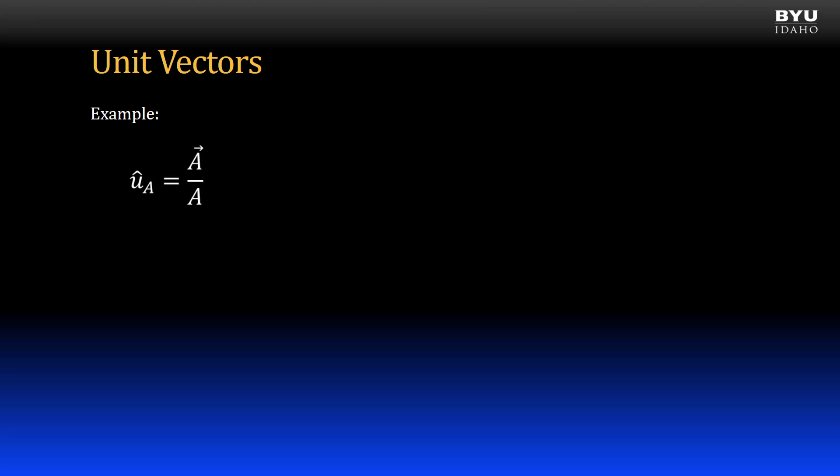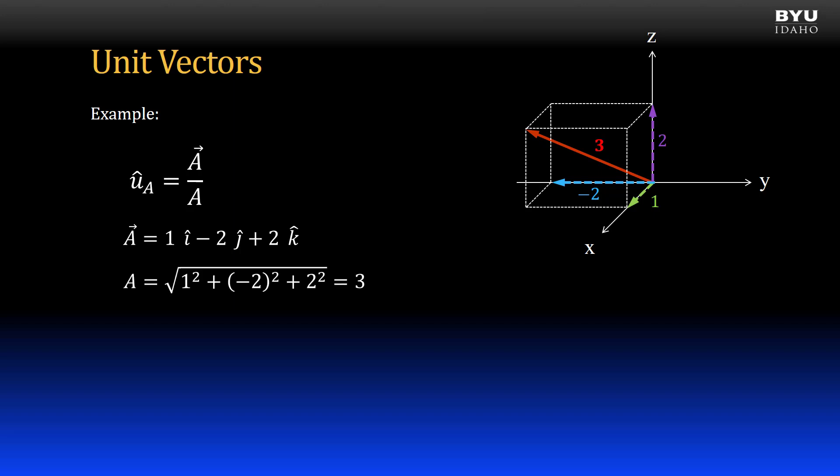For example, suppose I have the vector shown. I want to find a unit vector acting in the same direction. First, I find the vector's magnitude. Then, I divide each term of the vector by its magnitude. Now I have the unit vector.